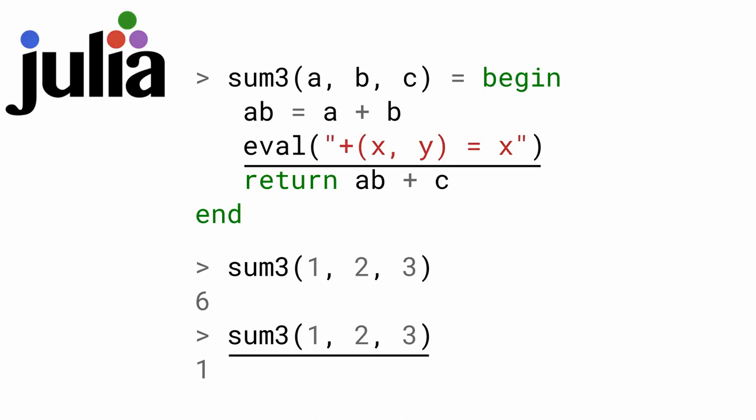Thus, the second call to sum3 uses the new definition of plus, causing sum3 to return its first argument. To understand how exactly that works, we will need a little more information about Julia internals.